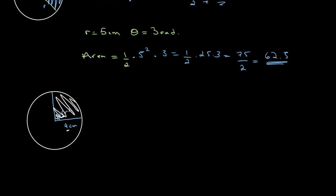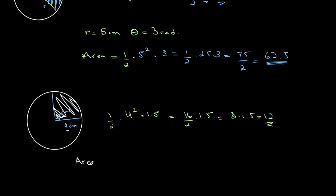So we get one half times r squared, which is 4 squared, multiplied by 1.5. That gives us 16 over 2 times 1.5, which equals 8 times 1.5, which equals 12. So the area of the shaded region — the area of the sector — is equal to 12 centimeters squared. Units are important: centimeters squared.